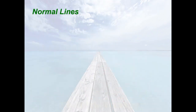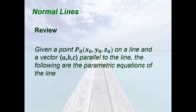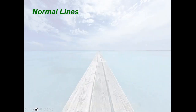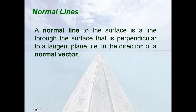Now we go to normal lines. Recall that given a point (x₀, y₀, z₀) on a line and a vector (a, b, c) parallel to that line, the parametric equations of the line are: x = x₀ + at, y = y₀ + bt, z = z₀ + ct. Our goal is to determine the parametric equations of the normal line to a given surface. A normal line to the surface is a line through the surface that is perpendicular to a tangent plane — that is, in the direction of a normal vector.